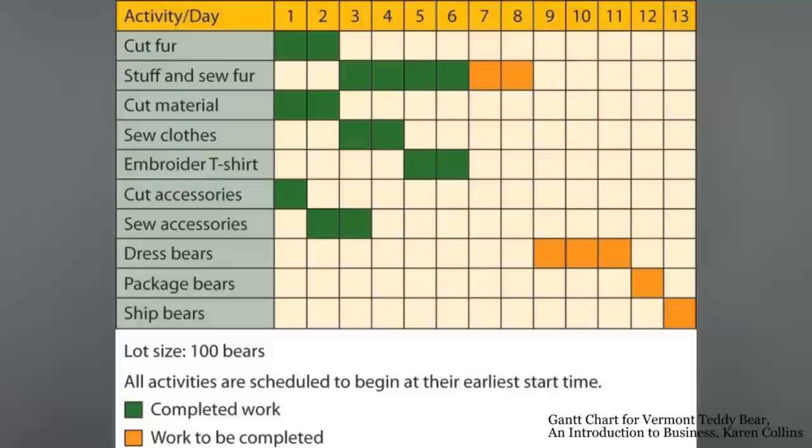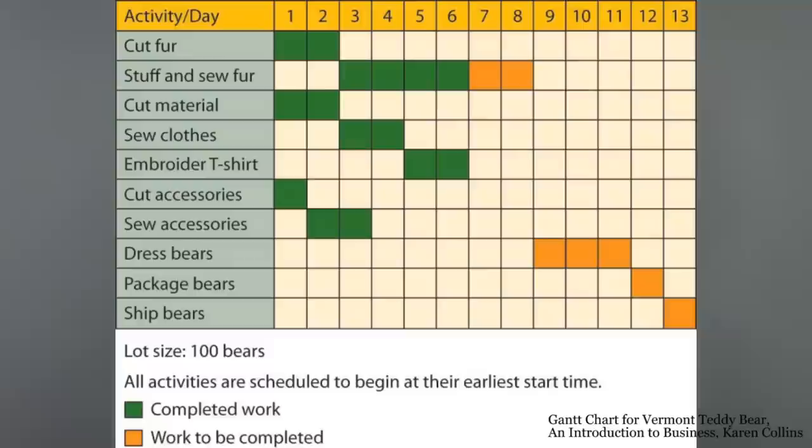Let's take teddy bears as an example. You can't ship it off before stuffing the toy's fur or dressing it — there's a clear progression of events. This Gantt chart shows the progress of how to build a Vermont teddy bear, as described by Karen Collins.